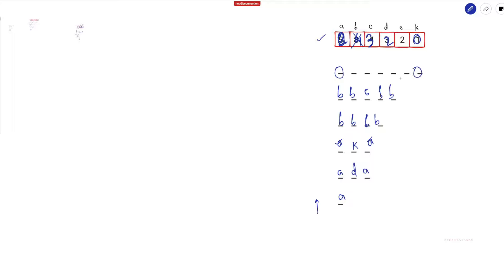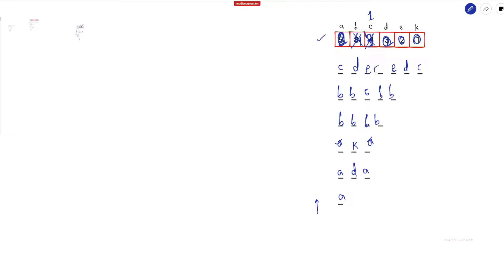For the final (longest) string requiring three pairs: take one pair of 'c', one pair of 'd', and one pair of 'e'. For the middle character, only one unpaired 'c' remains, so we fill it there. After filling all strings in this way, we've made all seven strings palindromes, so the answer is seven.